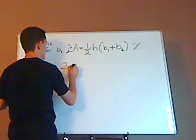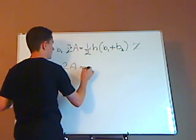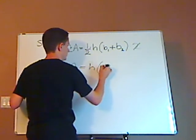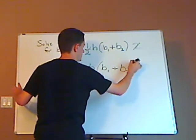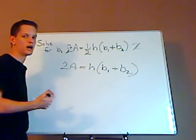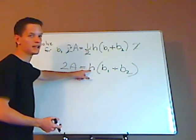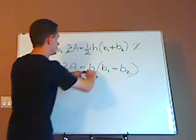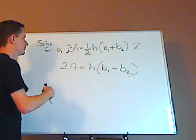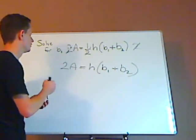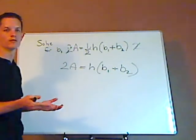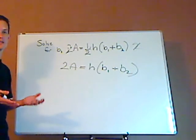So that leaves you with 2A equals H times B1 plus B2. Now you have some options either you can get rid of this H and distribute that but notice that if you do that, the B1 that's what you're solving for is still not going to be by itself. It's going to be less by itself.